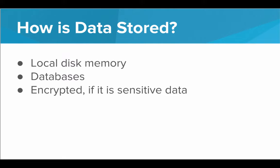Once data is collected, how exactly is it stored? Temporarily, data will be stored on what's called local disk memory — the memory on your physical computer. But eventually that data will be uploaded to a database. Companies like Google, Dropbox, and Facebook have massive databases that store all the data about all interactions that website users have. And oftentimes if the data is sensitive or contains personal information, that data will be encrypted. That way, should a hacker ever get access to the database, it'll look like gibberish unless the hacker also has the encryption key, which they won't.